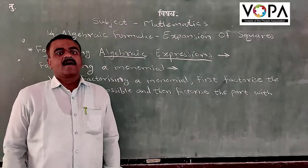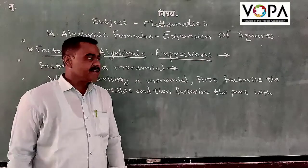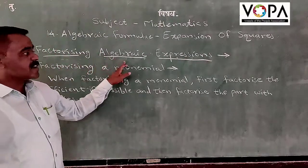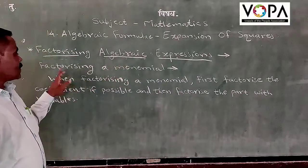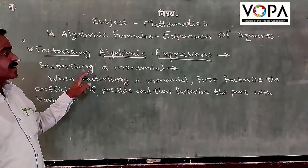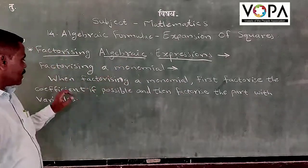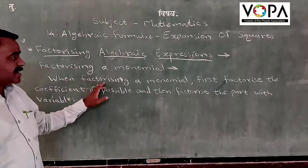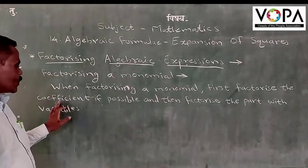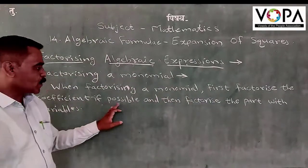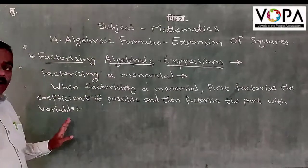Hello friends, our next part is factorizing algebraic expressions. Now, factorizing a monomial: first factorize the coefficient if possible, and then factorize the part with variables.